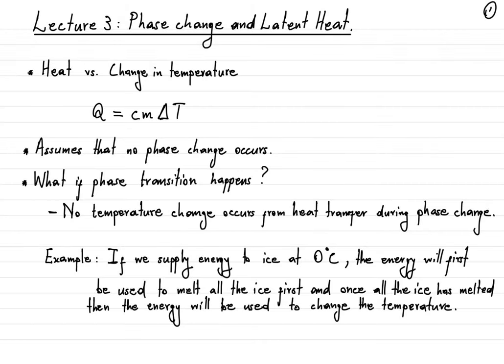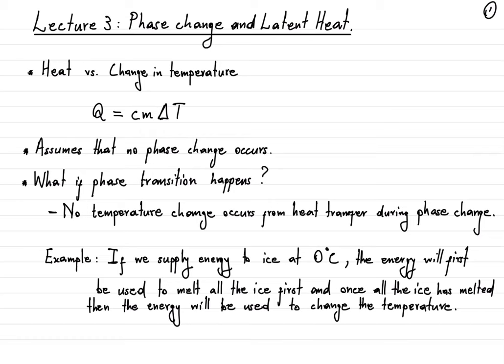Welcome back to our discussion of thermodynamics. So far we have had a triumphant path in that we were able to quantify temperature, and furthermore we were able to connect the changes in temperature to heat transfer. The summary of this triumph is contained in this equation: when we supply heat to a substance of mass M with a specific heat capacity of C, we would expect to observe a temperature change delta T.